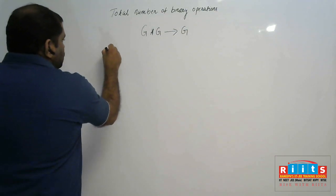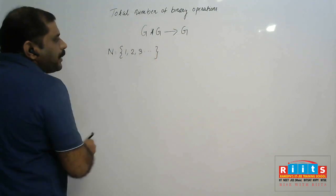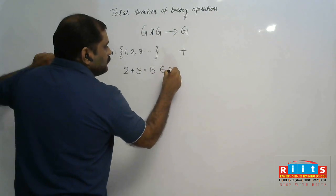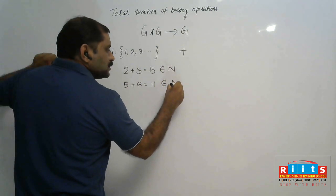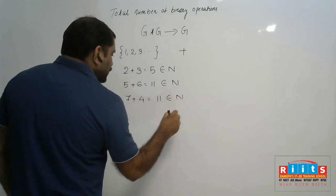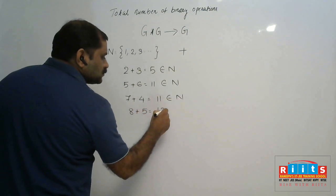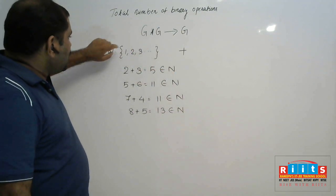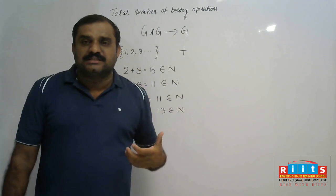For example, take N, the set of natural numbers: {1, 2, 3, ...}. Define an operation plus. We know that 2 plus 3 is equal to 5, which belongs to natural numbers. 5 plus 6 equals 11, also belongs to natural numbers. 7 plus 4 equals 11, also belongs to natural numbers. 8 plus 5 equals 13, also belongs to natural numbers. So G star G maps into G itself — that type of operation is called a binary operation.